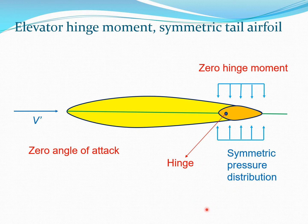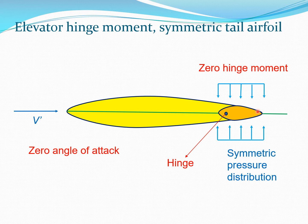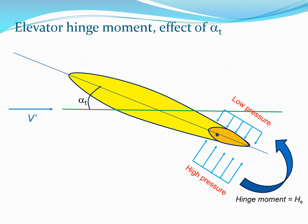What we are going to do is perturb this in two parts. We will first perturb the tail section — the yellow airfoil — and then perturb the elevator section, trying to intuitively understand how the hinge moment will be impacted. Let us first perturb the tail section.